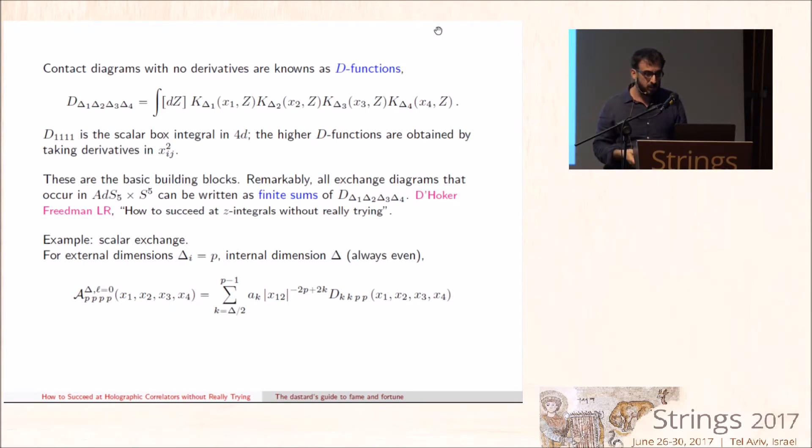The D₁₁₁₁ is the scalar box integral, which is related to the dilogarithm function, and the higher ones are obtained by taking derivatives. Rather remarkably, and this is somewhat miraculous, we discovered 18 years ago that for the case of interest, which is AdS5×S5, all exchange diagrams can be reduced to a finite sum of these contact diagrams.